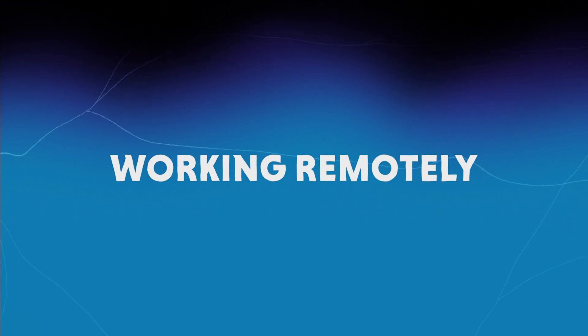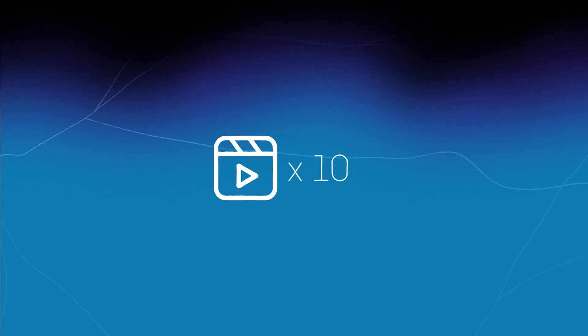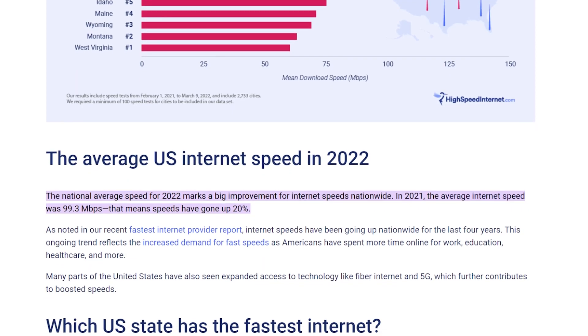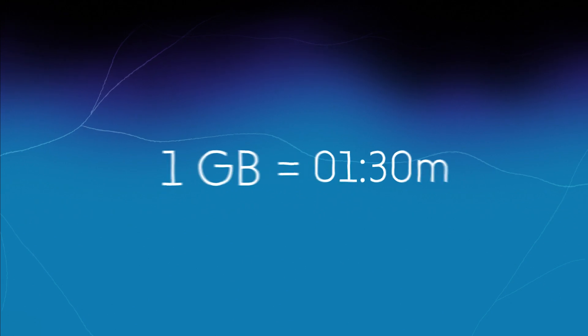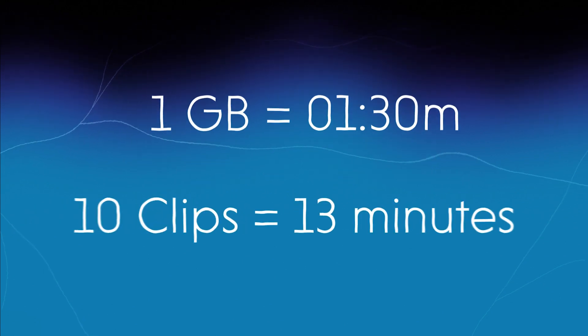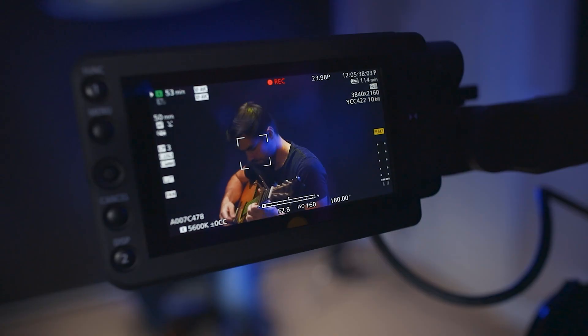Now let's talk about working remotely and why all of this matters. The bigger the resolution, the bigger the file sizes are going to be. And while there are compression softwares to help ease the burden, you still have to deal with downloading and uploading footage when you receive it or finish editing. For example, if you're working remotely with 10 clips to download and one of them is already one gigabyte, at the 2021 average US internet speed of 99.3 megabits per second, that one gigabyte download takes roughly a minute and 30 seconds — meaning 10 clips could take about 13 minutes, and that's just in 1080p. Imagine how much more data you're dealing with in 4K.